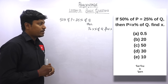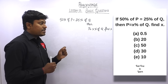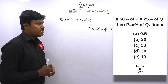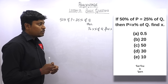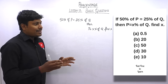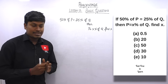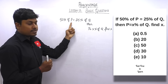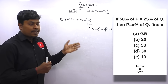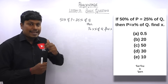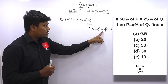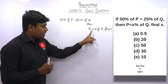Question number one: if 50% of p is equal to 25% of q, then p is equal to x% of q — find x. They are giving us an expression: 50% of p equals 25% of q, and our target is to find the value of x using a second expression.